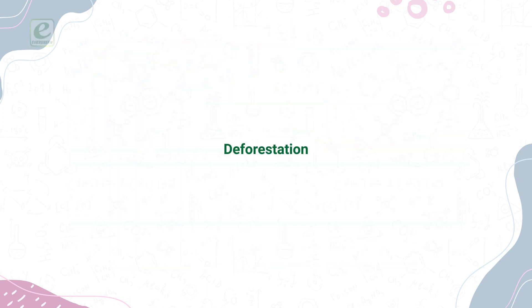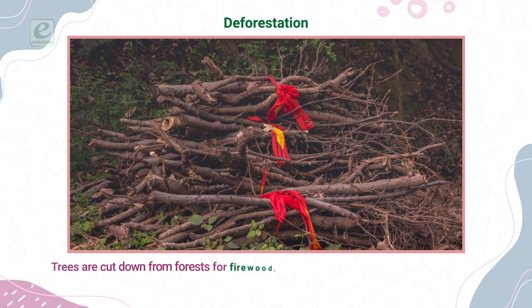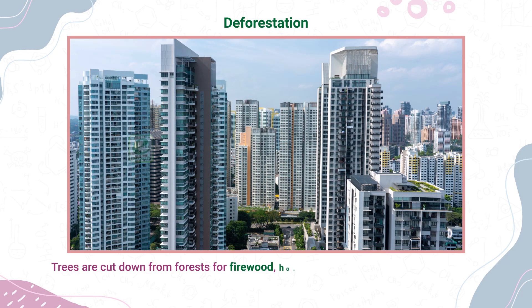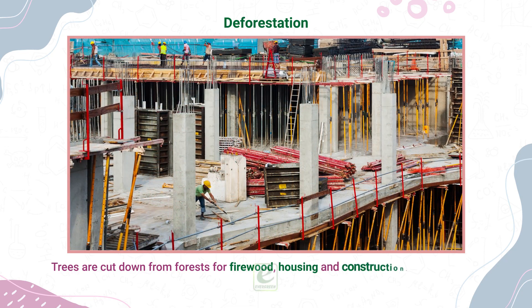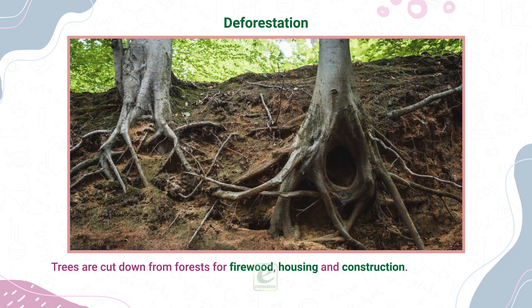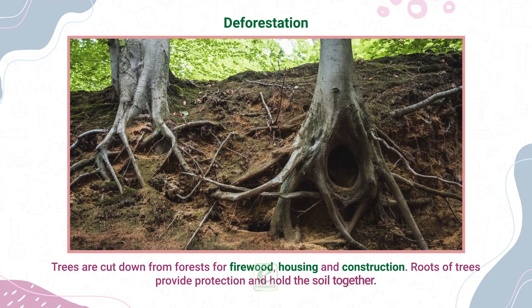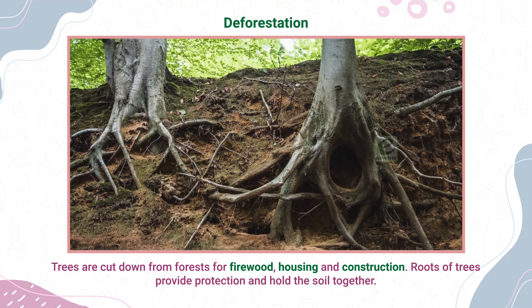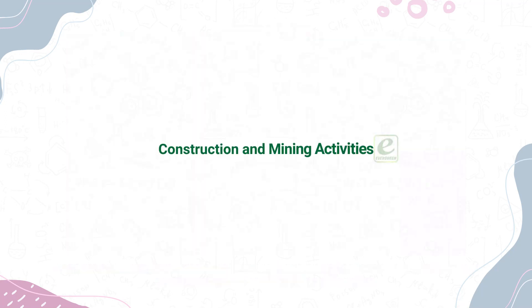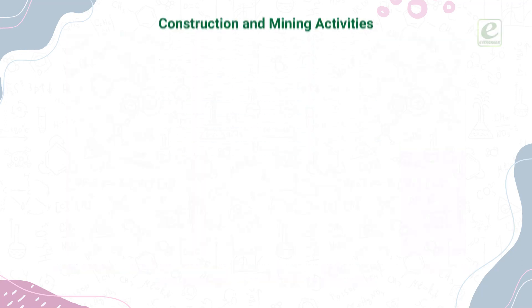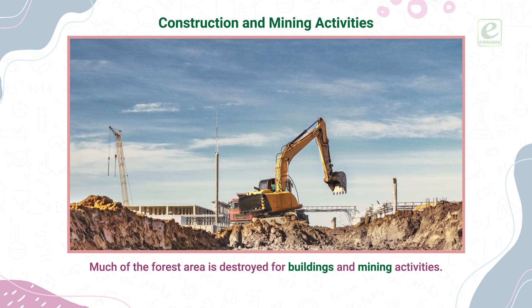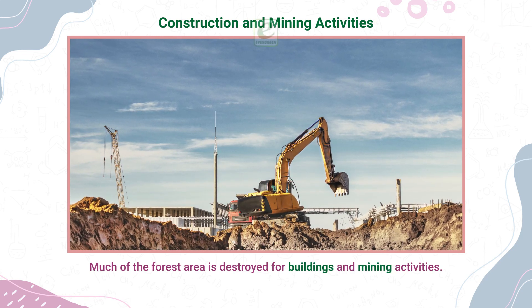Deforestation — trees are cut down from forests for firewood, housing, and construction. Roots of trees provide protection and hold the soil together. Construction and Mining Activities — much of the forest area is destroyed for building and mining activities.